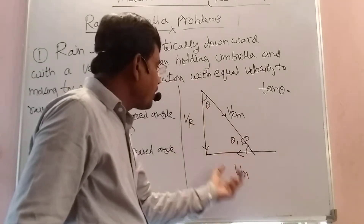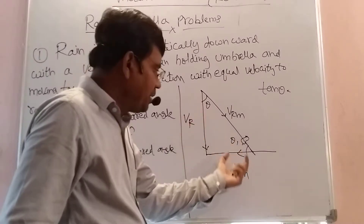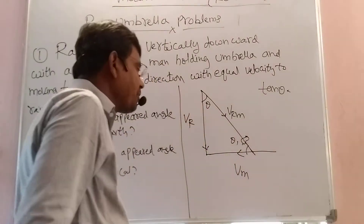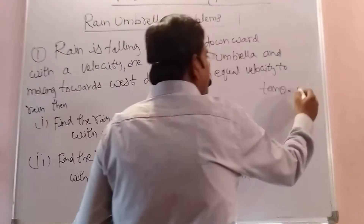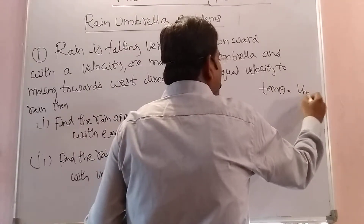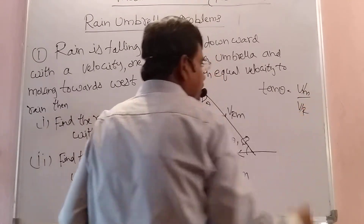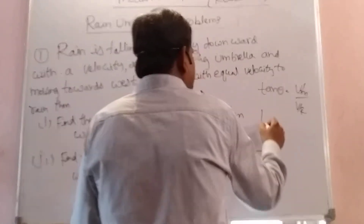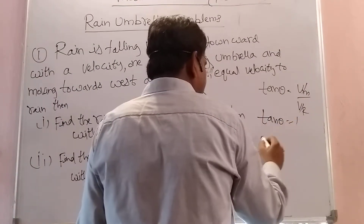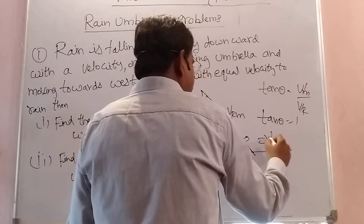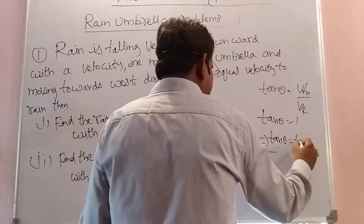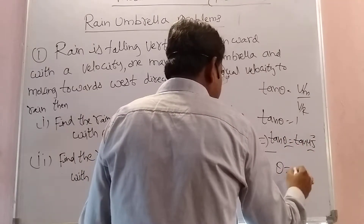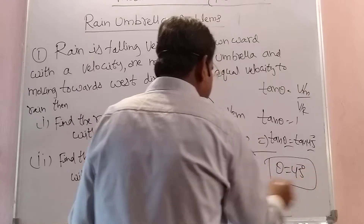In this physical world, the physical quantities must be the same kind — it may be displacement, velocity, or acceleration, anything. Now, tan theta equals Vm by Vr. These two are equal according to the given condition, so tan theta equals one, which means tan theta equals tan 45 degrees. Therefore, theta equals 45 degrees.